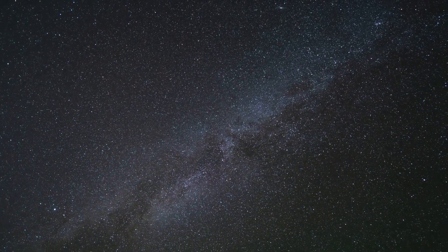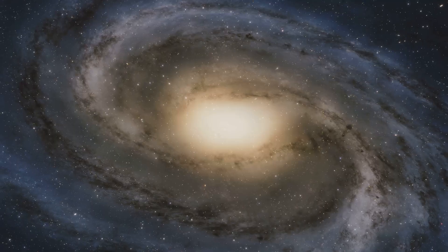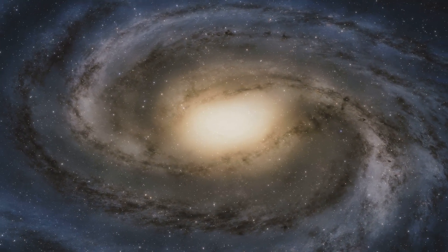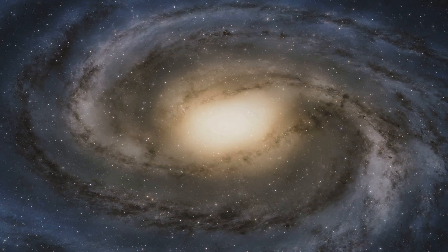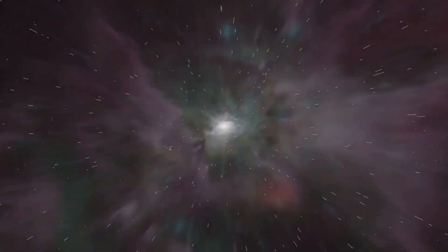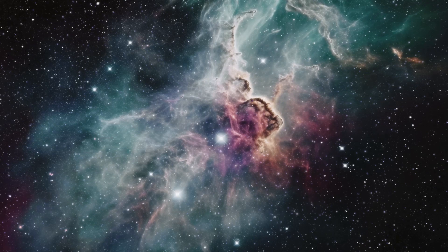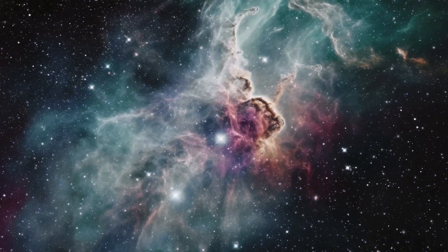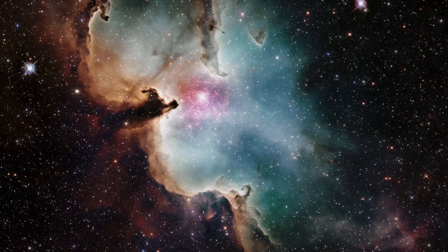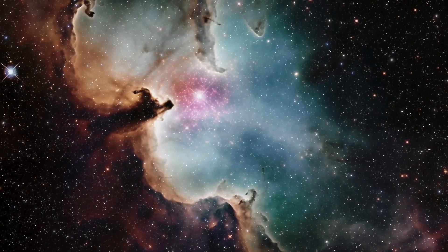And when we look beyond the boundaries of our own galaxy, the distances continue to boggle the mind. The Andromeda galaxy, our closest spiral galaxy neighbor, is approximately 2.5 million light years away. The light we see from Andromeda today started its journey when our ancestors were crafting the earliest stone tools. Even within our own galaxy, the distances are staggering. The center of the Milky Way is about 27,000 light years away from Earth. The light we see from there today started its journey when woolly mammoths roamed the Earth. These vast distances give us a sense of the scale of our universe. They humble us and make us appreciate the complexity and grandeur of the cosmos. It's a reminder that the universe is much larger than our human perspective often allows us to comprehend.